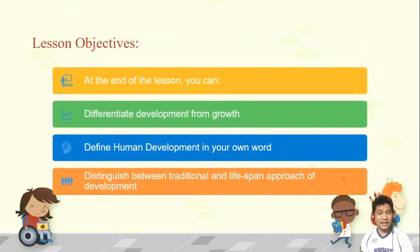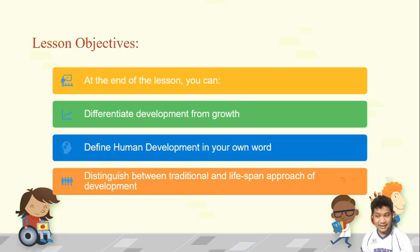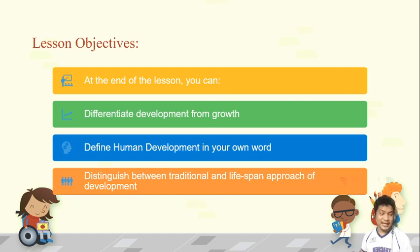Let's start with the identification of our lesson objectives. At the end of the lesson, there are three things you need to accomplish. First, you will be able to differentiate development and growth. Second, you will be able to define human development in your own words. And third, you will distinguish between the traditional and the lifespan approach of development.